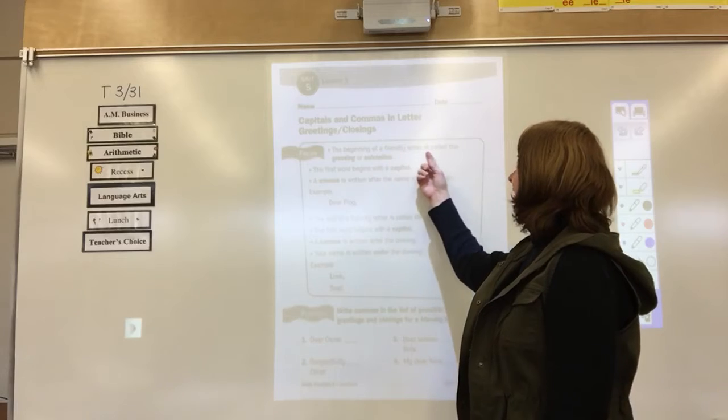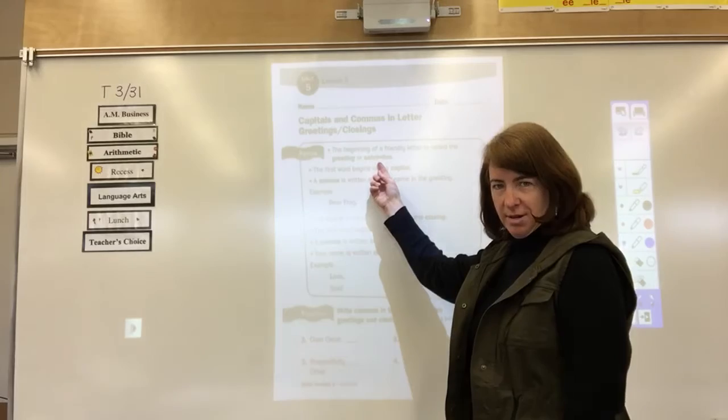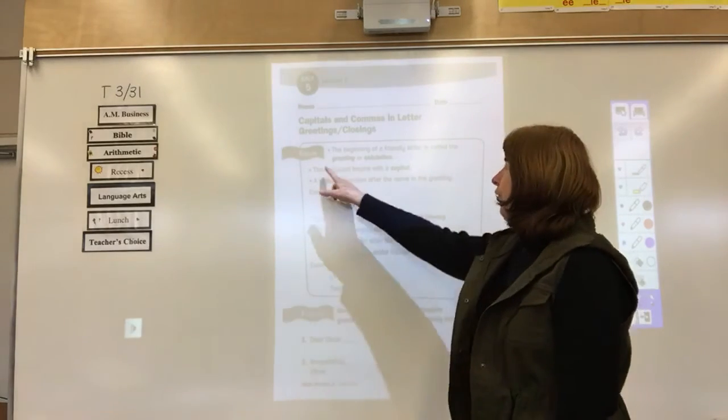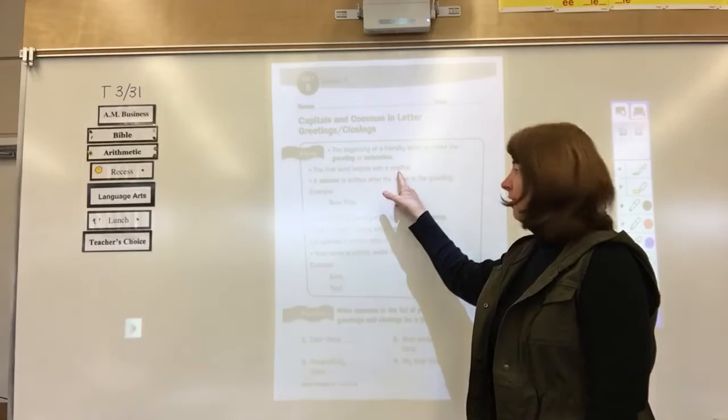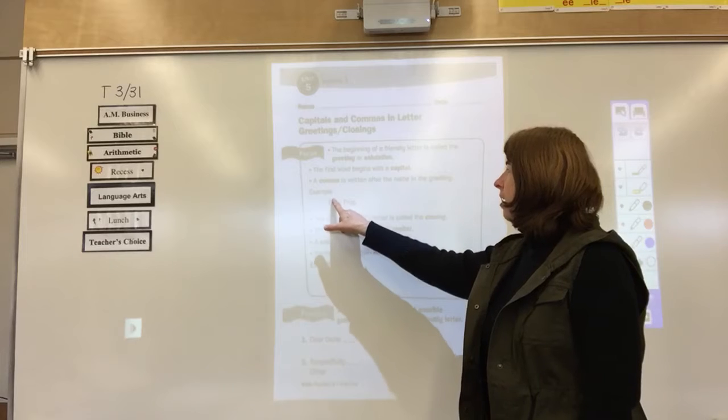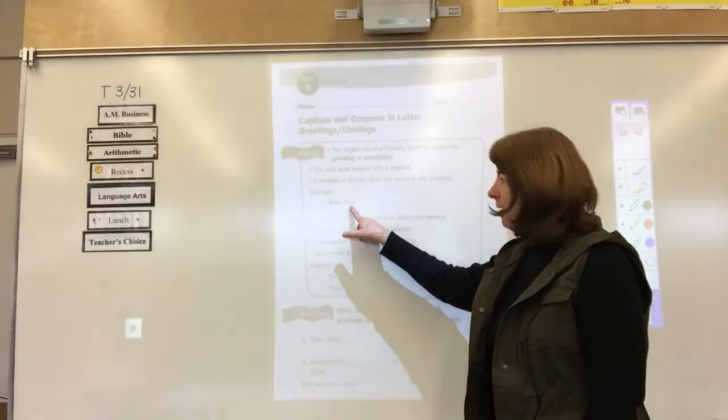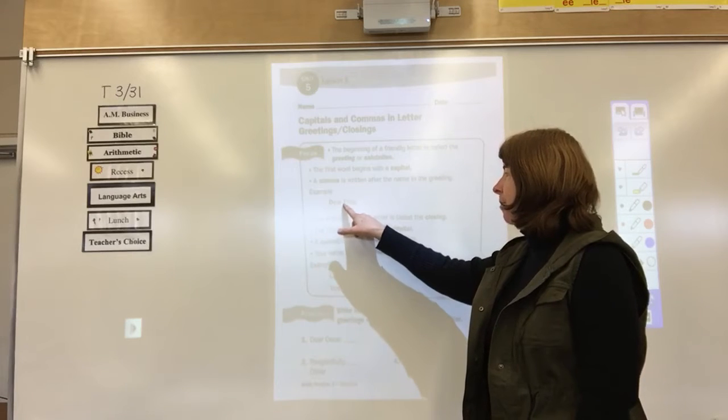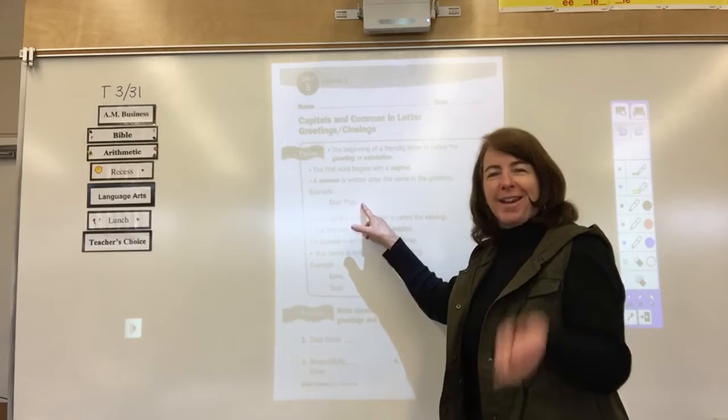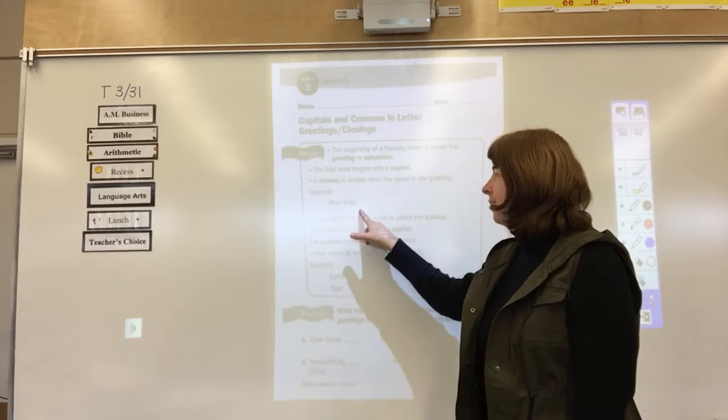We're going to be looking at the greetings and closings of a friendly letter. So here we go. The beginning of a friendly letter is called the greeting or salutation. Salutation is a big word, but it basically means greeting. It's how we open the letter. The first word begins with a capital letter. A comma is written after the name of the greeting. So you have the first word, which is like your greeting word with the person's name. In this case, it's a capital D for dear, capital F for frog, comma.